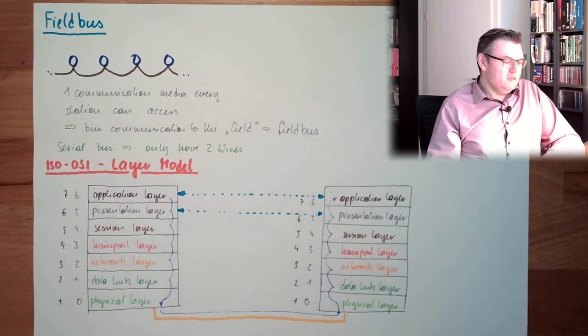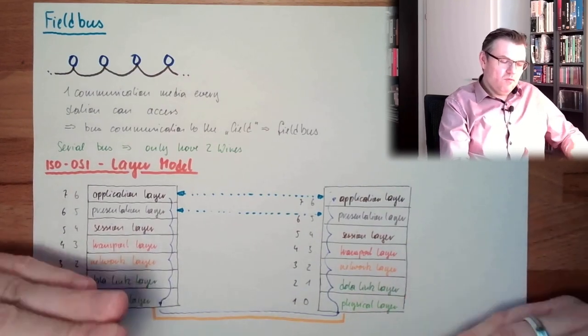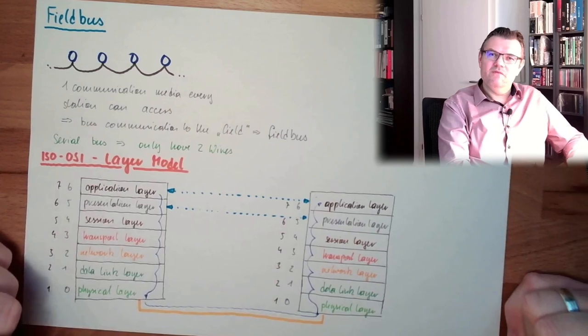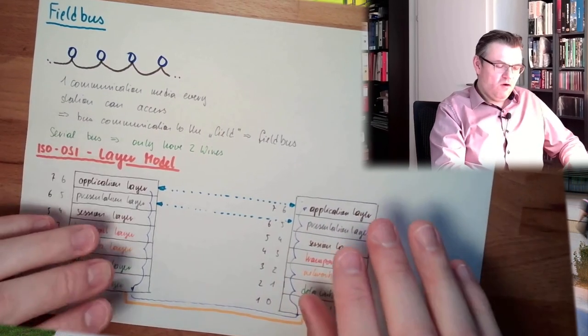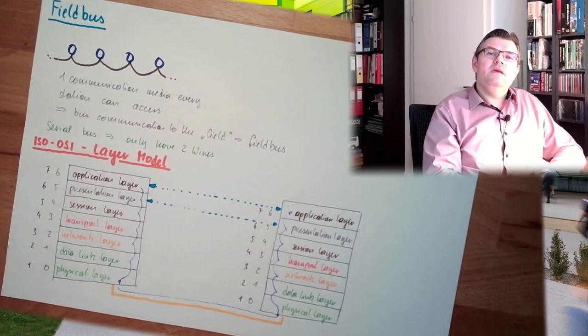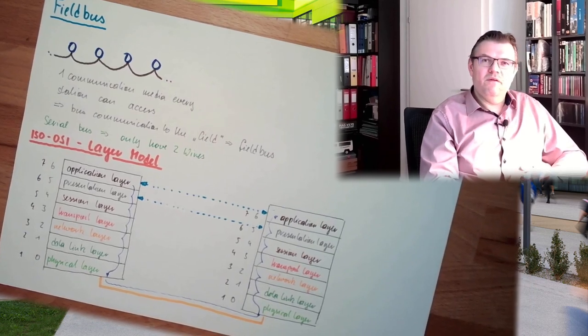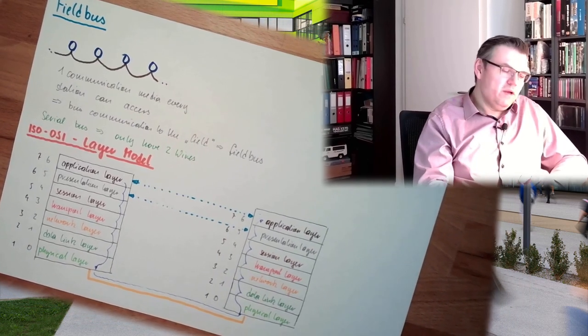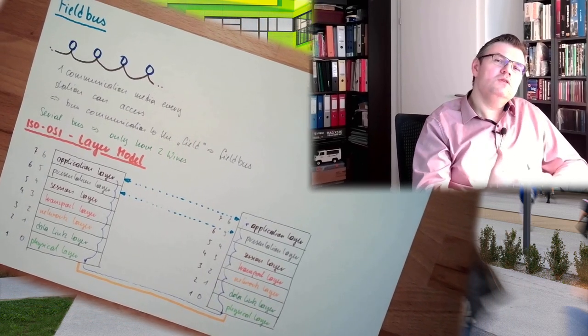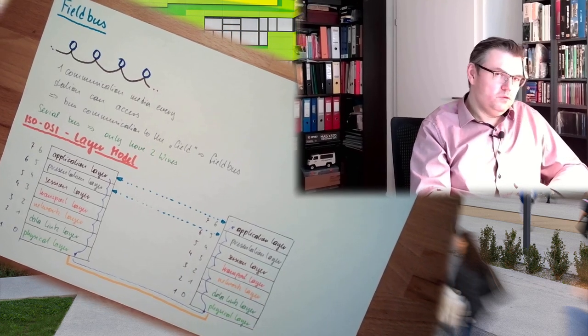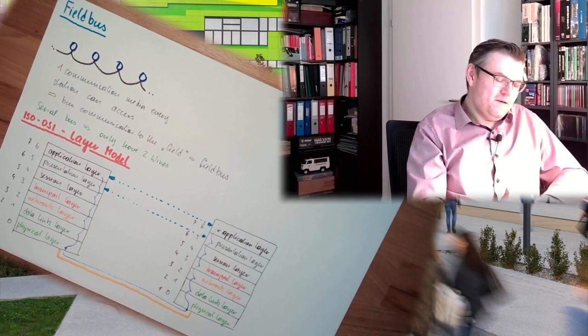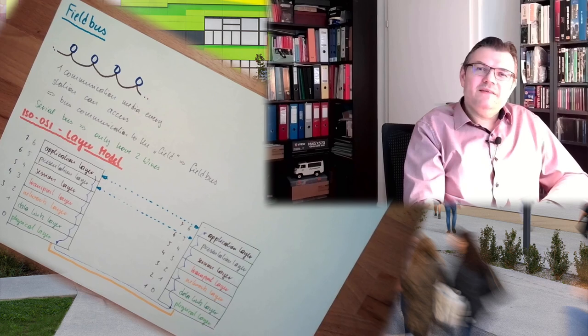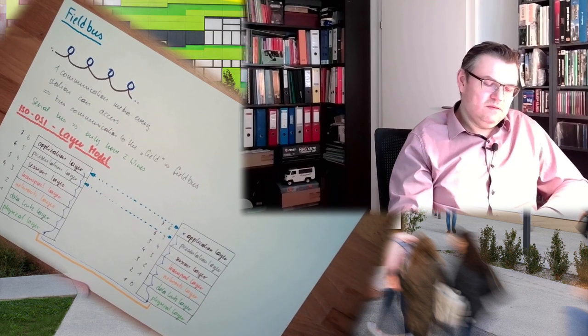This is the ISO layer model. This now makes us a little bit independent from the manufacturer. So we can now make interoperability between different things. And each communication device - field bus device - has its own defined layers.